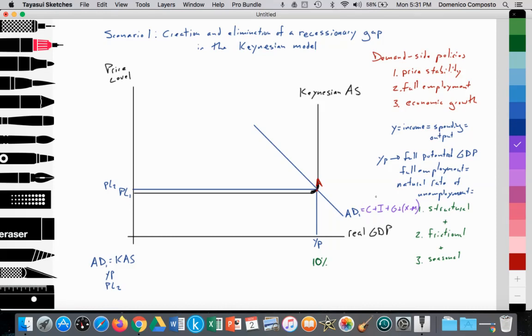So consumer confidence is falling. People are worried whether or not they're going to be fired or forced to work part-time. Investment spending is going down because they're starting to see that they're getting less revenue because people are spending less. So unfortunately, consumption spending due to lower consumer confidence and lower business confidence reduces C and I.